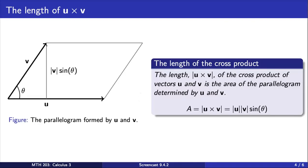So this shows that the length of a cross product of two vectors u and v is equal to the area of the parallelogram determined by u and v.